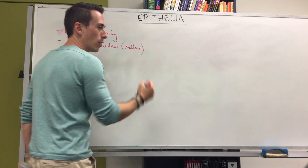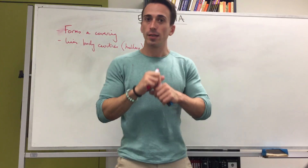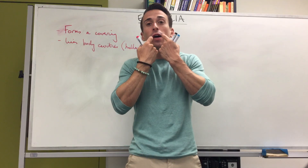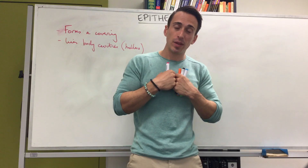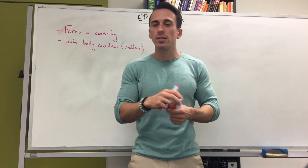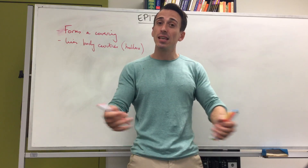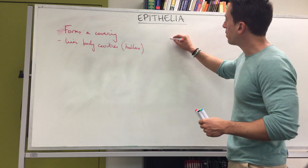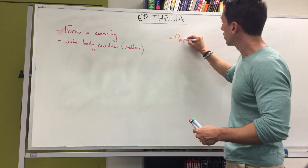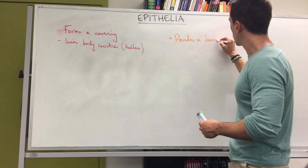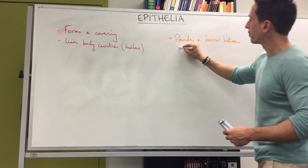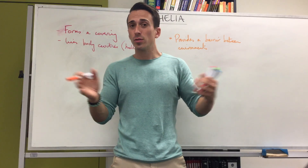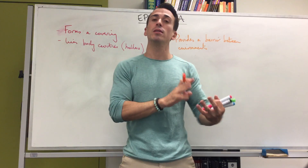Think about where epithelial tissue lines hollow body cavities. In the urinary tract, epithelial tissue lines the inside of our urethra, ureters, and bladder. It also lines the inside of our oral cavity, esophagus, trachea, stomach, and the rest of our internal GI tract. So epithelial tissue basically lines the outside and the inside of our body. It provides a barrier between environments, and this is important because it allows certain environments to be separated — sometimes you don't want substances from one area to penetrate into another.